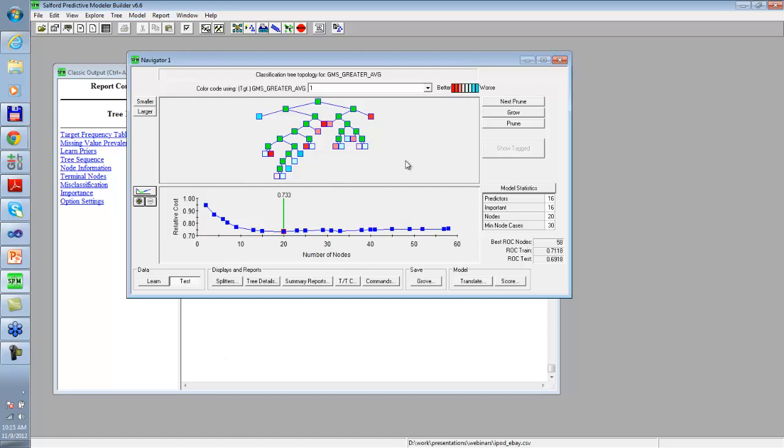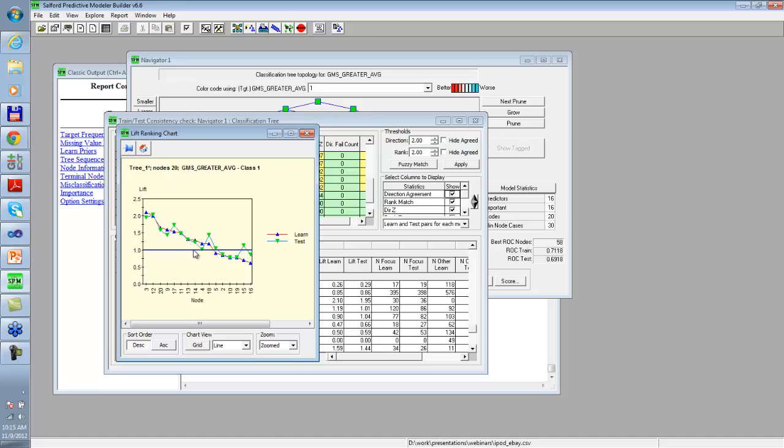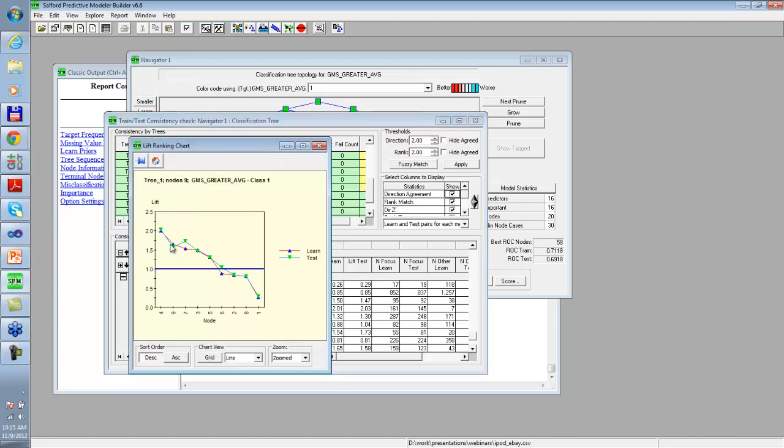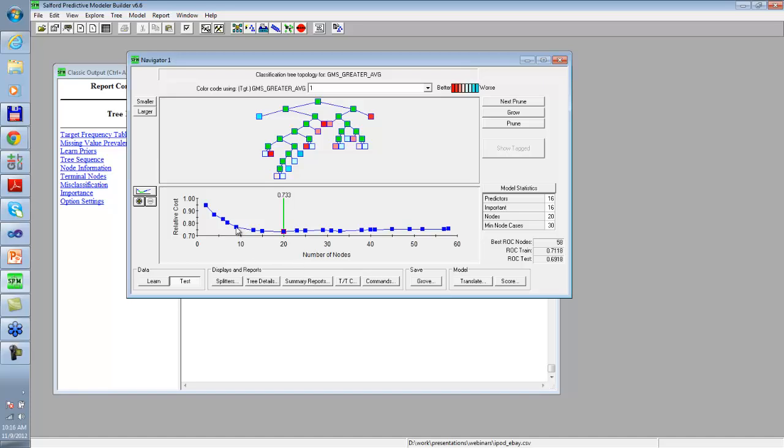Sometimes when people look at single trees, they want to know tree stability. If you look at the tree that's shown on the screen, some nodes exhibit certain variation between learn and test performance, meaning depending on which dataset you're looking at, you get either better or worse performance. The tree that has nine terminal nodes exhibits great stability in terms of agreement between learn and test.